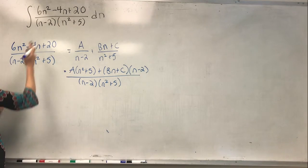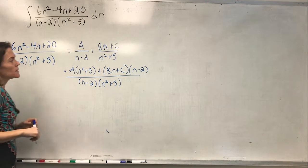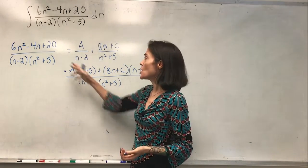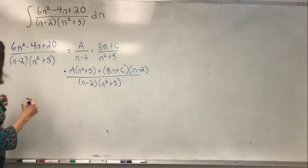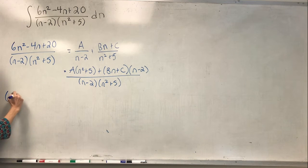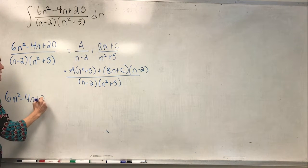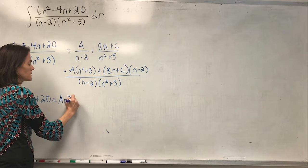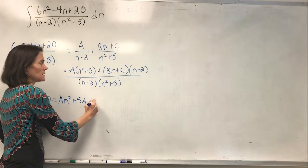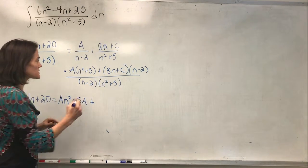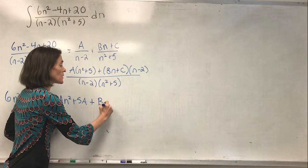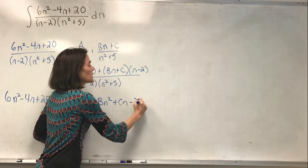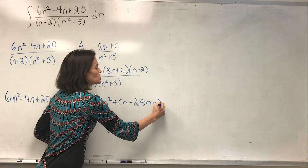This fraction equals the original integrand. We have two fractions that are equal with the same denominators, so we set the numerators equal. We have 6n squared minus 4n plus 20 equals — I'll multiply all of this out. Foiling Bn plus C times n minus 2: I have Bn squared, plus Cn, minus 2Bn, minus 2C.